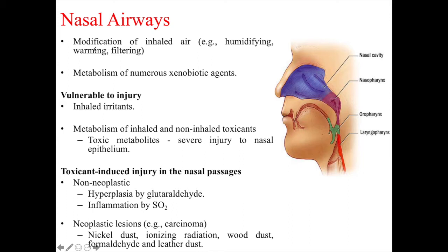Metabolism of inhaled and sometimes non-inhaled toxicants can lead to the formation of toxic metabolites, which can cause severe injury to the nasal epithelium. Toxicant-induced injury in the nasal passages can be neoplastic or non-neoplastic. For example, hyperplasia can be caused by chemicals like glutaraldehyde, and inflammation can be caused by gases like sulfur dioxide. Neoplastic or cancerous lesions involving the formation of carcinomas can be caused by dust from metals like nickel, ionizing radiation, wood dust, formaldehyde, and leather dust.